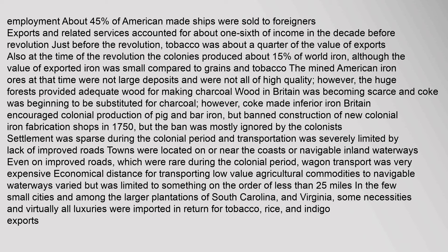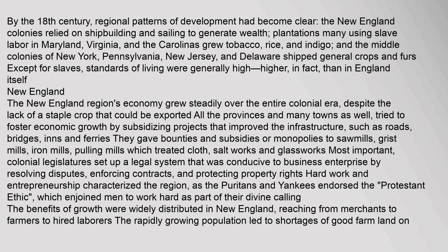By the 18th century, regional patterns of development had become clear. The New England colonies relied on shipbuilding and sailing to generate wealth. Plantations in Maryland, Virginia, and the Carolinas — many using slave labor — grew tobacco, rice, and indigo. The middle colonies of New York, Pennsylvania, New Jersey, and Delaware shipped general crops and furs. Except for slaves, standards of living were generally high — higher, in fact, than in England itself.